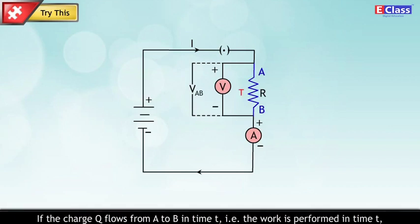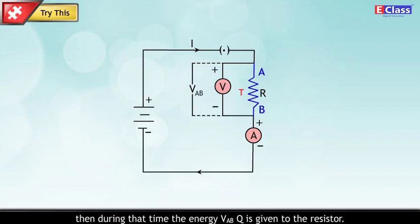that is, the work is performed in time T, then during that time, the energy VAB×Q is given to the resistor.